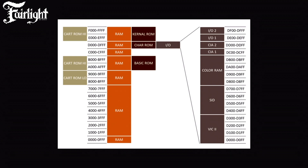The C64 can technically address 64 kilobytes, but the cool thing is that it actually has more memory than that. It has 64 kilobytes of RAM but it also has ROM. In order to accommodate this, it's equipped with a special version of the 6502 processor — the 6510.